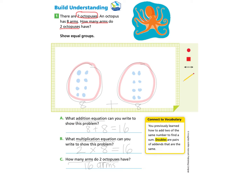A side note: they would like to review the word doubles. When you add two of the same number to find the sum, doubles are pairs of addends — numbers added together — that are the same. In this example, eight and eight are the same number, so they are considered doubles. We may see more doubles as we keep working today.